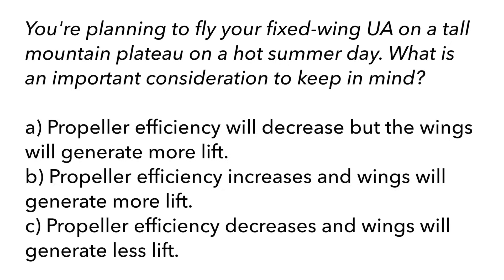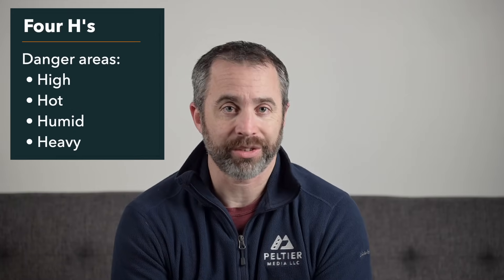This final question involves both density altitude and fixed wing aircraft. You're planning to fly your fixed wing unmanned aircraft on a tall mountain plateau on a hot summer day. What is an important consideration? Options are: A — propeller efficiency decreases but wings generate more lift; B — propeller efficiency increases and wings generate more lift; or C — propeller efficiency decreases and wings generate less lift. We're seeing a lot more fixed wing questions on the test, but the basic principles of aerodynamics and performance apply across aircraft types. There are four dangerous performance conditions — the four H's: high, hot, humid, and heavy.